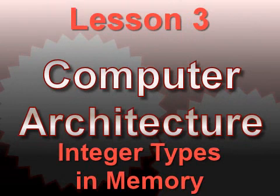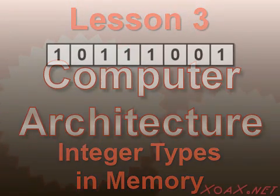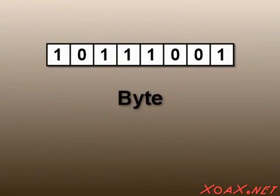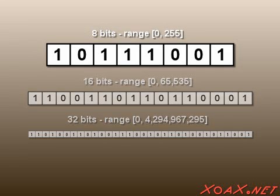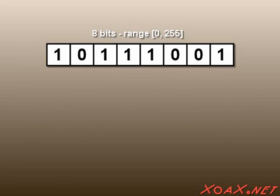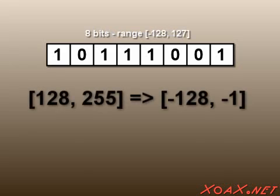Lesson 3: integer types in memory. A byte, or 8 bits, can be used to represent the integers 0 through 255, and we can add more bits to represent larger integers. However, we frequently need to represent negative quantities. To do this, we can take the larger half of the number range and wrap it around to the negative side.